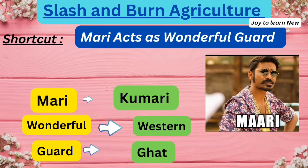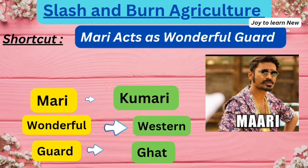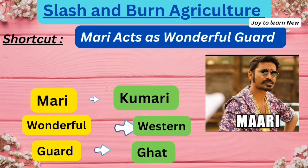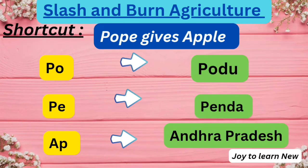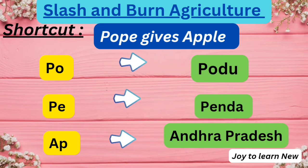The next shortcut is 'Mari acts as wonderful god,' which is the name of a movie. Mari refers to Kumari, wonderful — W — refers to Western, and God refers to Ghats (same sound). So Kumari is the name in the Western Ghats region.